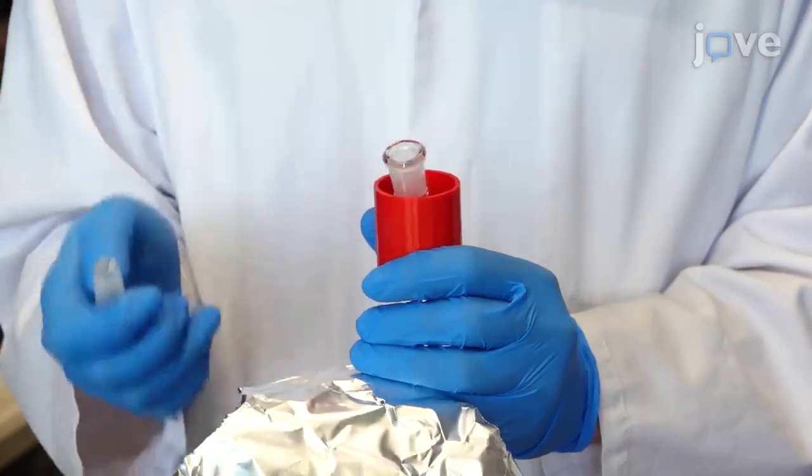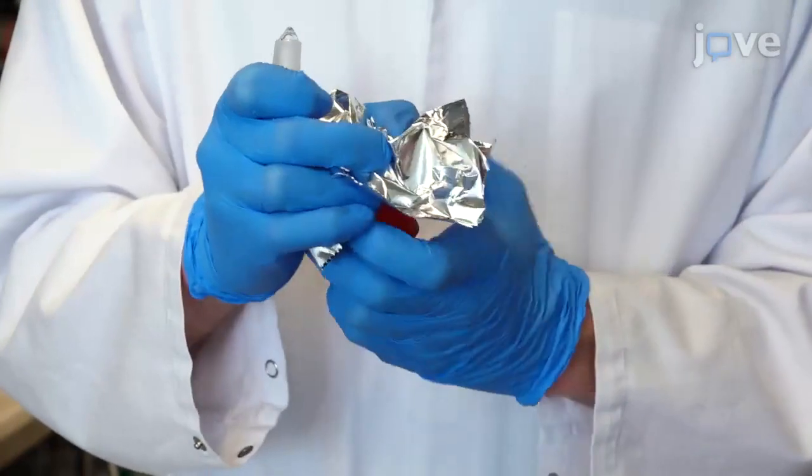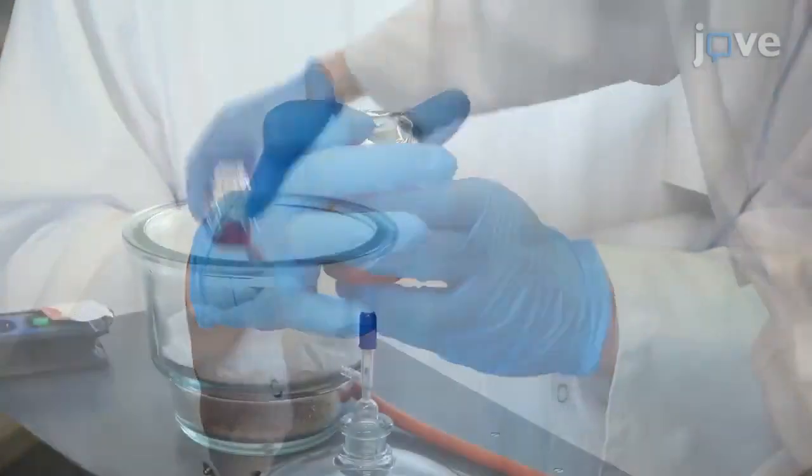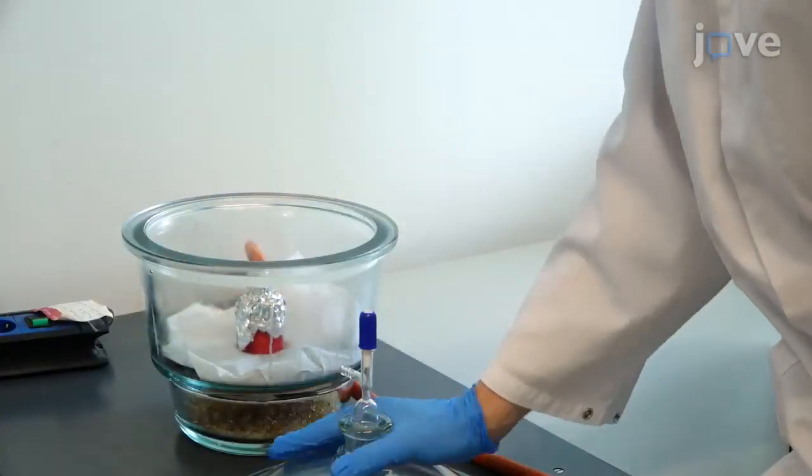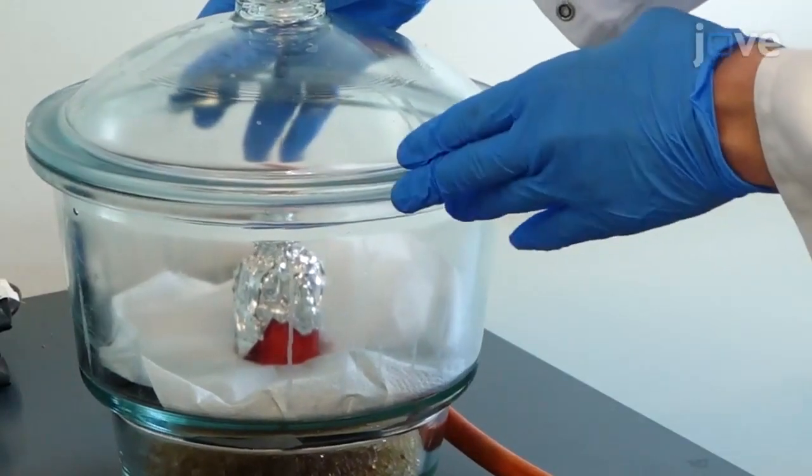After this, loosely wrap aluminum foil around the opening of the round bottom flask to prevent the loss of glass beads and place the flask into a desiccator for at least one hour to ensure that the remaining chloroform and methanol are evaporated.